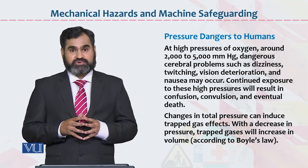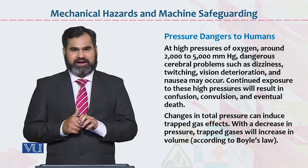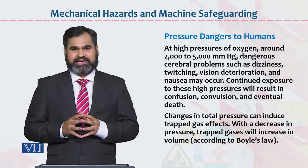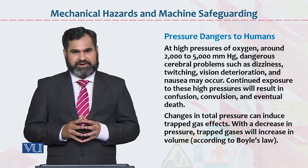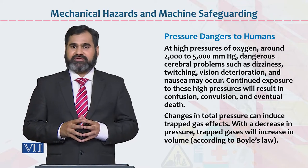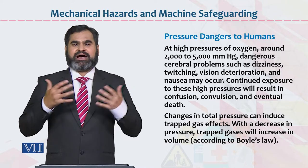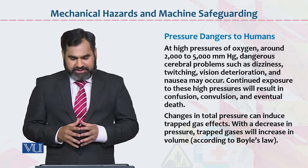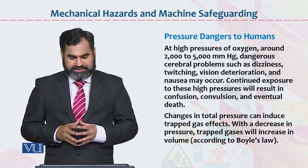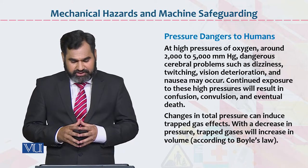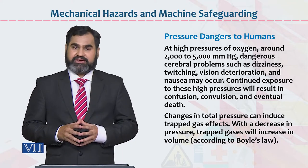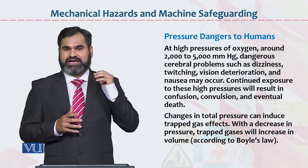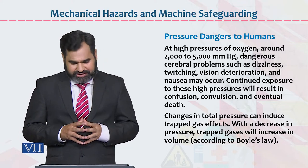Pressure dangers to human. Pressure organization के लिए sometimes requirement होती है products बनाने की, लेकिन sometimes यह इंसान के लिए बहुत नुकसान दे है. यहाँ पे कुछ figures बनाए हैं. At high pressure of oxygen, अगर oxygen का pressure बहुत ज्यादा high हो जाए, around 2000 to 5000, then dangerous cerebral problems such as dizziness, vision deterioration and nausea may occur. अगर कोई चीज़ आपके level से ज्यादा या below चले जाए तो आपके लिए problem create हो सकती है.